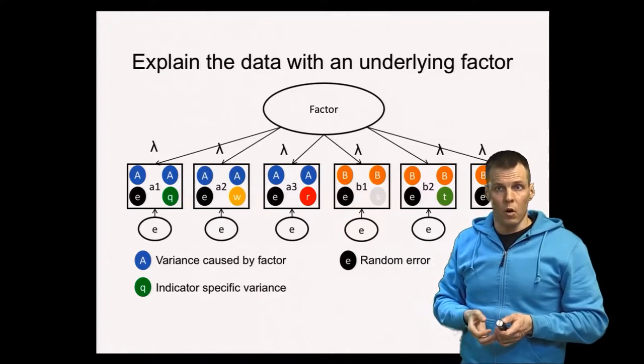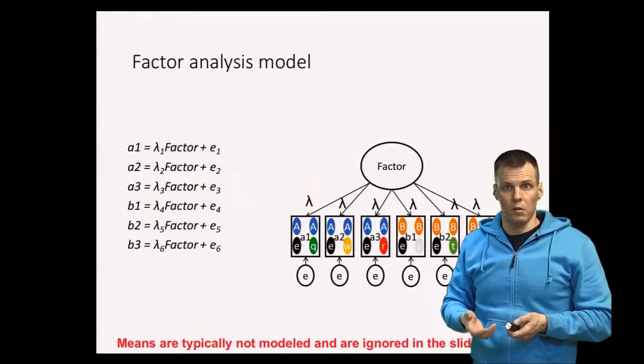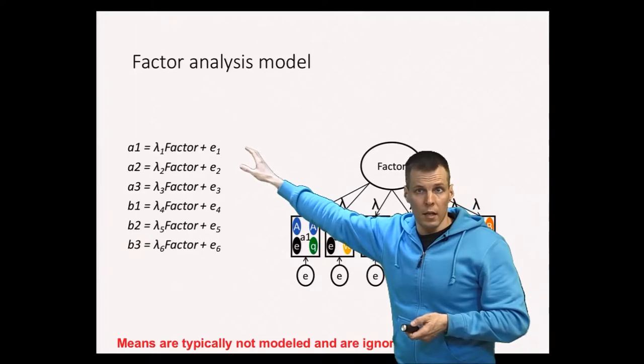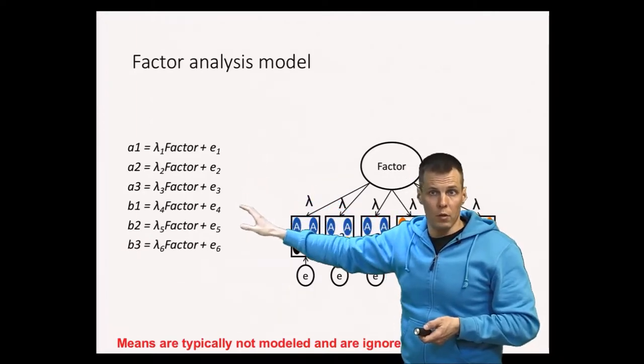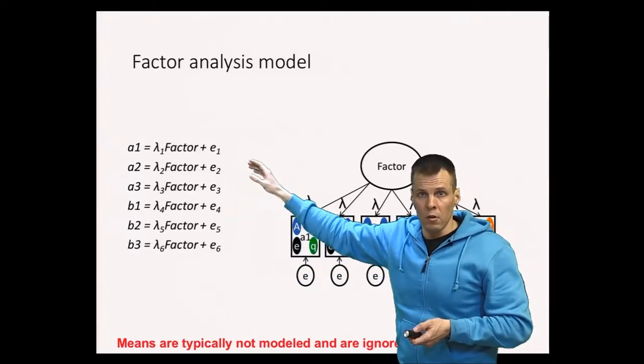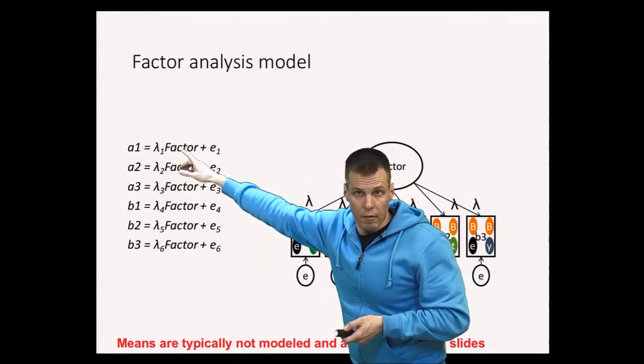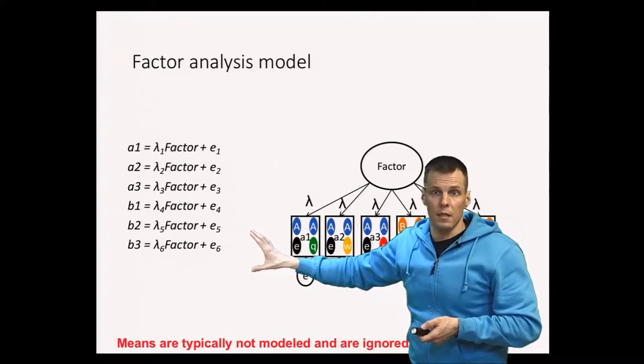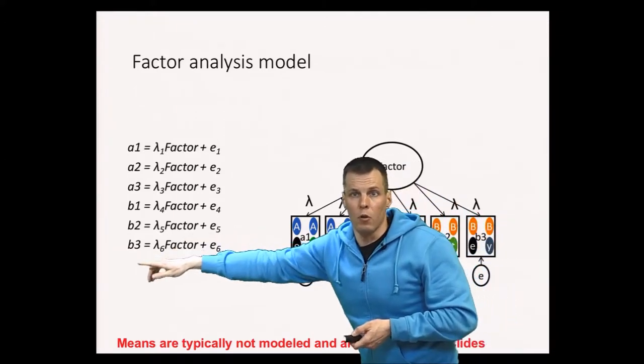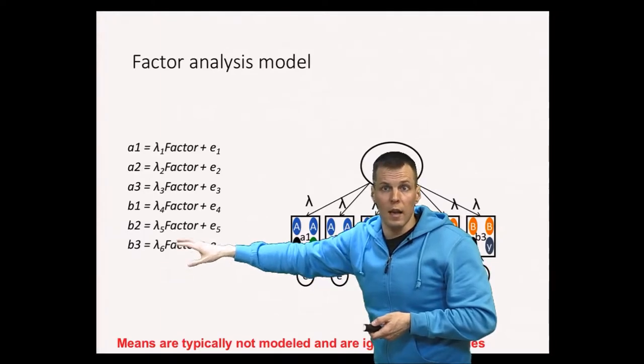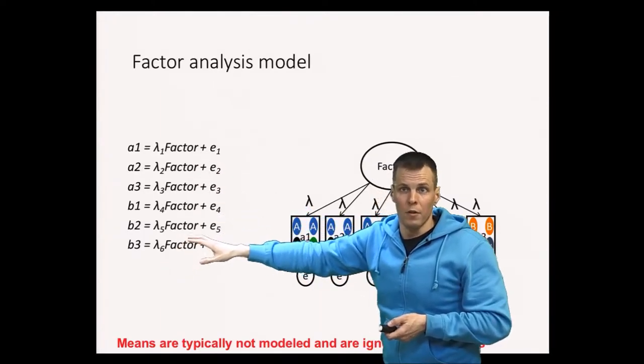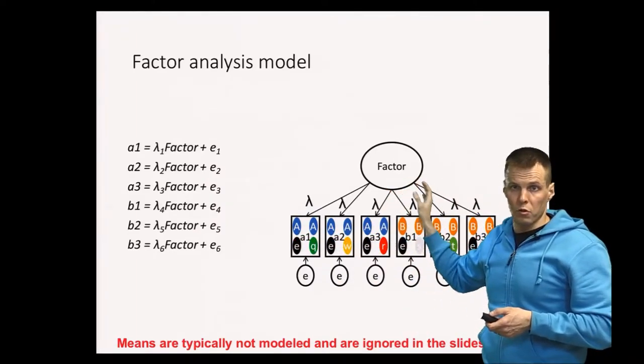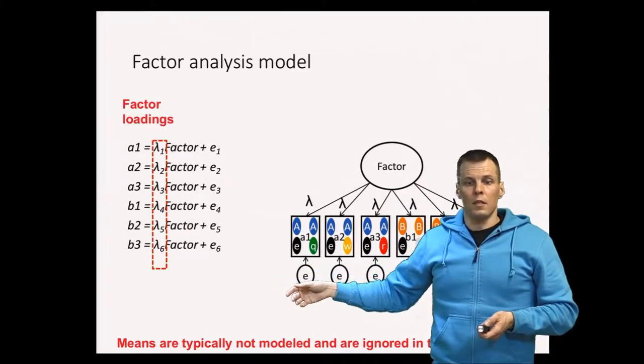The factor analysis model is a statistical model, so it's a set of equations. We are saying that all these indicators A1, A2, A3, B1, B2, B3 are a function of the factor times factor loading, for which we use the Greek letter lambda, plus some error that we don't observe. So it's a regression equation; the only difference is that we only observe the dependent variable. We don't observe the key independent variable. So this is a latent variable. If it was an observed variable, then we could just regress all indicators on the factor, but we can't because the factor is not observed. These are the factor loadings, and these are the item uniqueness.